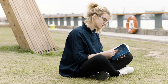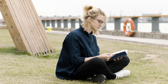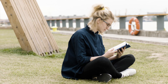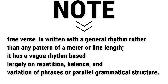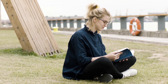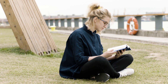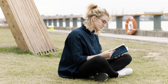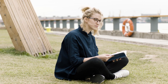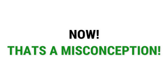These characteristics were meant to free poetry from the restriction of formal metrical patterns and approximate the free rhythm of natural speech. In this sense, free verse is written with a general rhythm rather than any pattern of meter or line length. It has a vague rhythm based largely on repetition, balance, and variation of phrases or parallel grammatical structure. There is no doubt that the absence of a regular stress pattern or meter may lead to the misconception that this type of verse is arbitrary and lacks the discipline imposed by conventional rhythmic patterns.